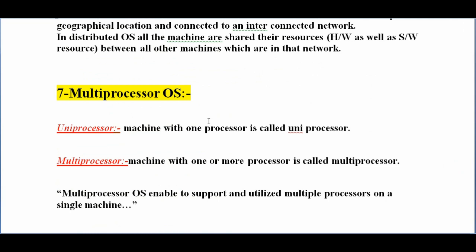The next is multiprocessing operating system. A system that has multiple processors is called a multiprocessing operating system. There are two concepts: uniprocessor, meaning a machine with one processor, and multiprocessor, meaning a machine with one or more processors.